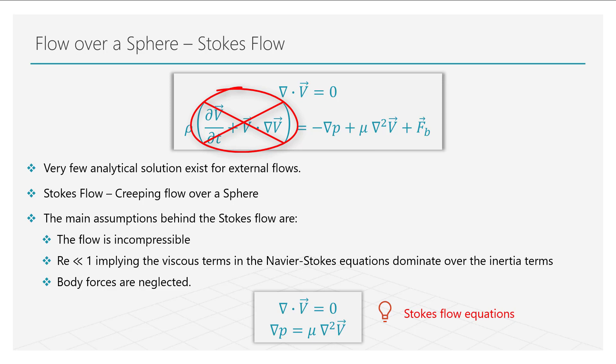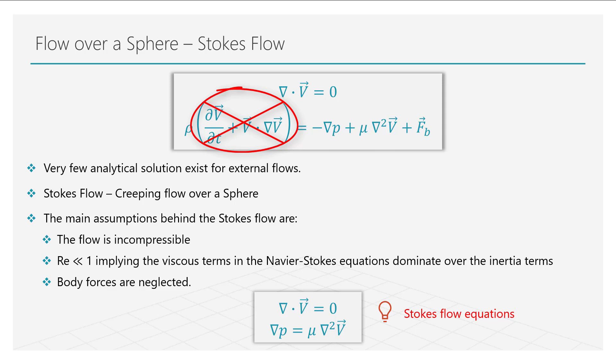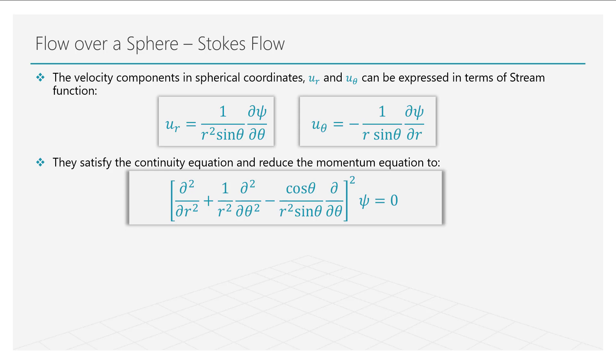Now, let us assume that the flow is axisymmetric. The components of velocity in the spherical coordinate system are shown here. Substituting these into the continuity equation and involving some vector calculus, we obtain the governing equation for the stream function.